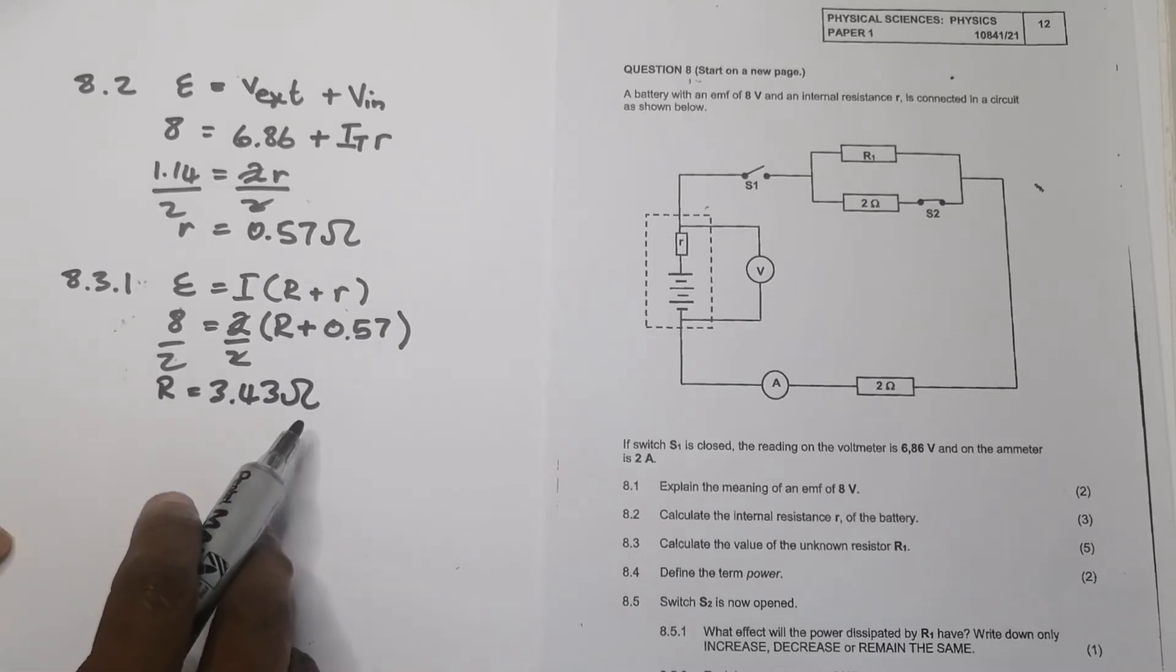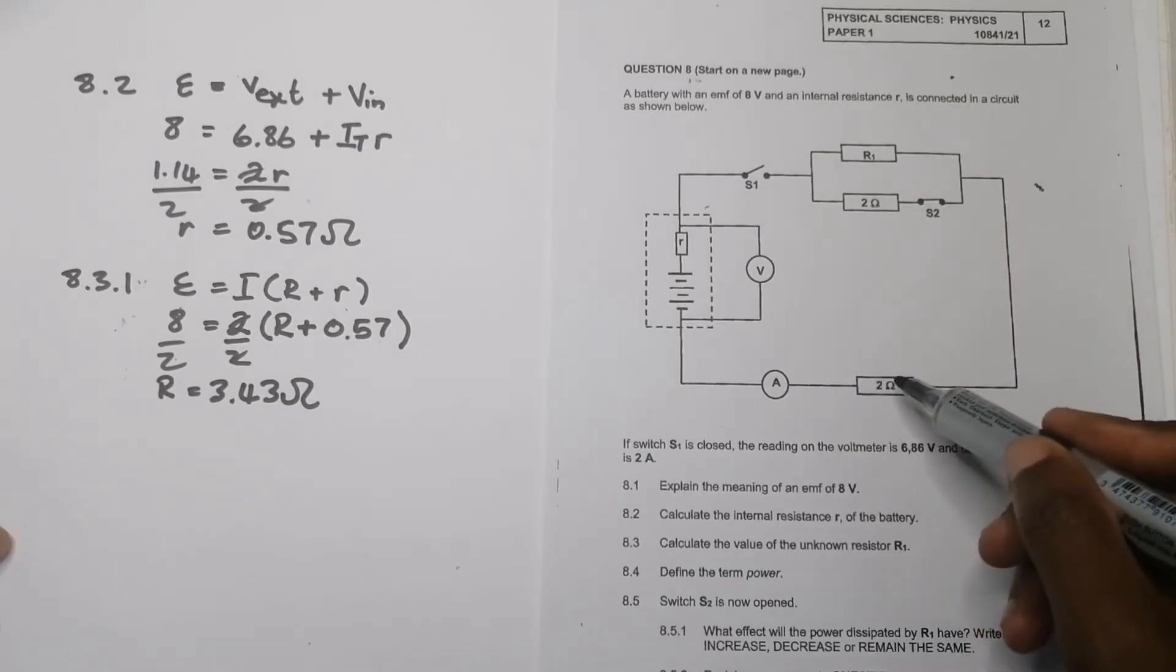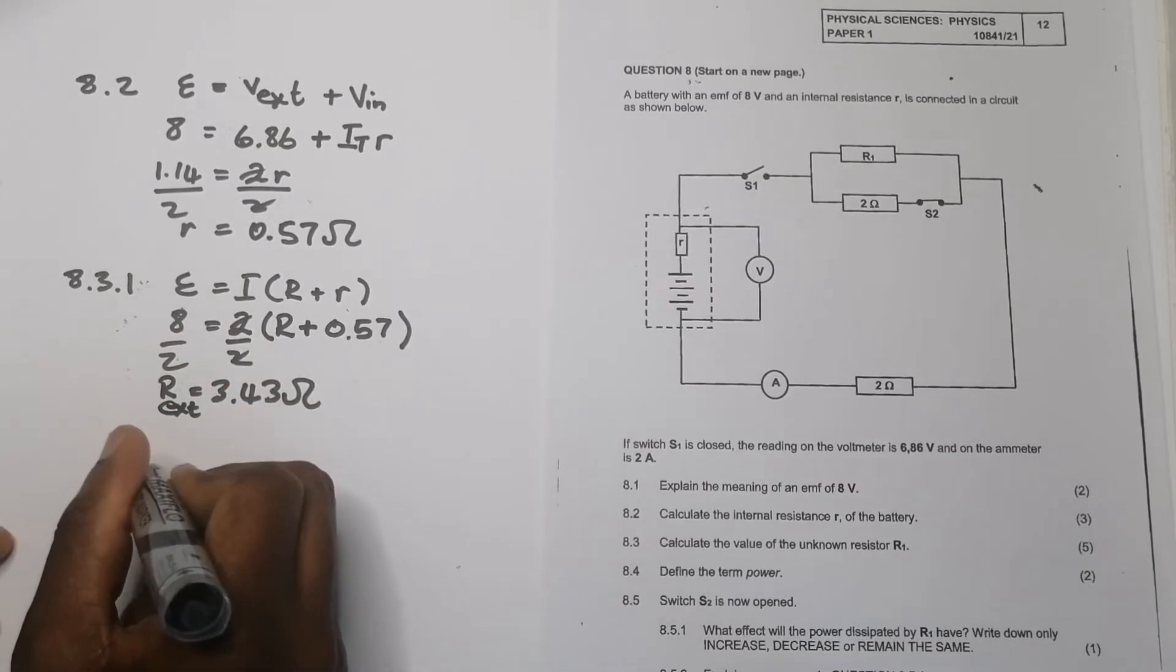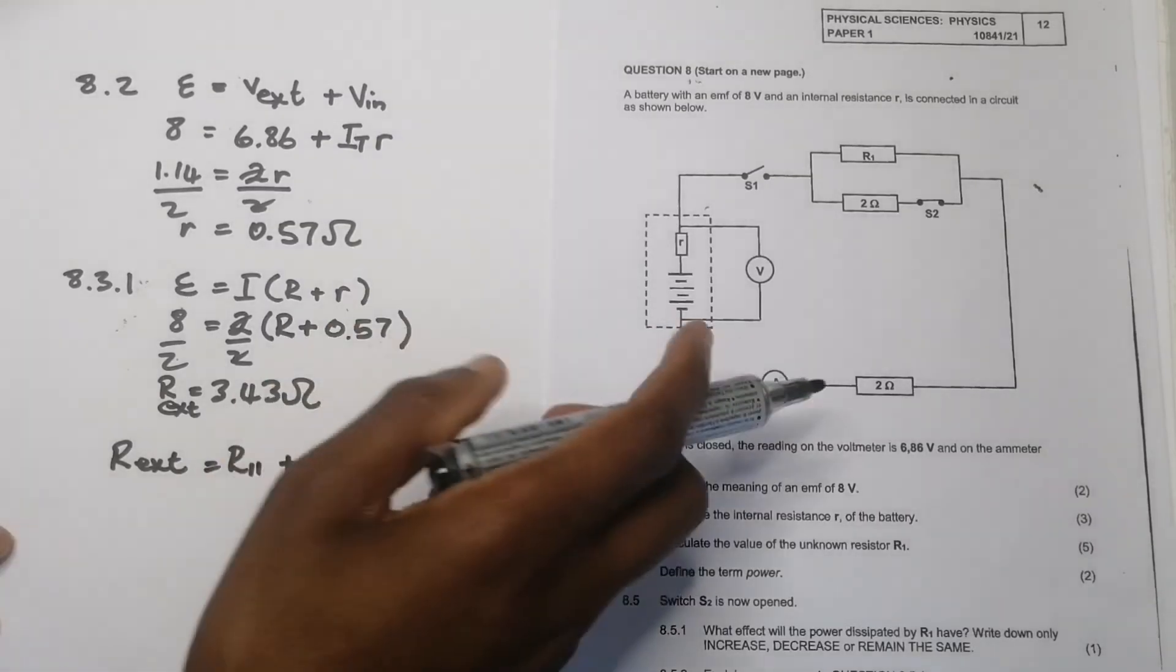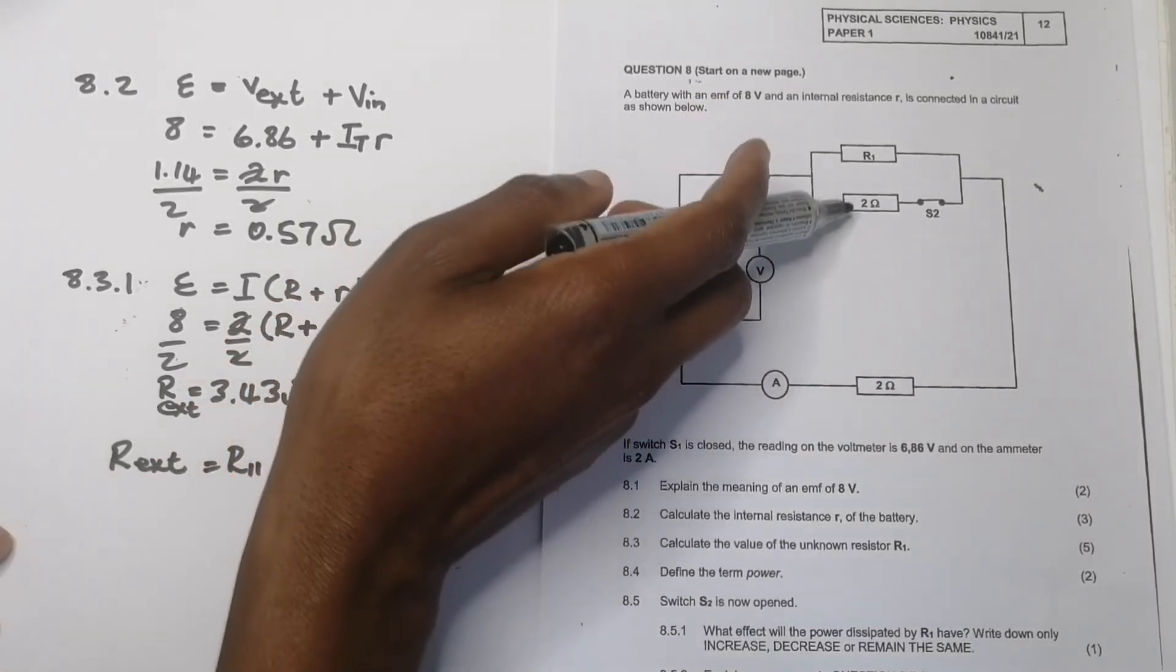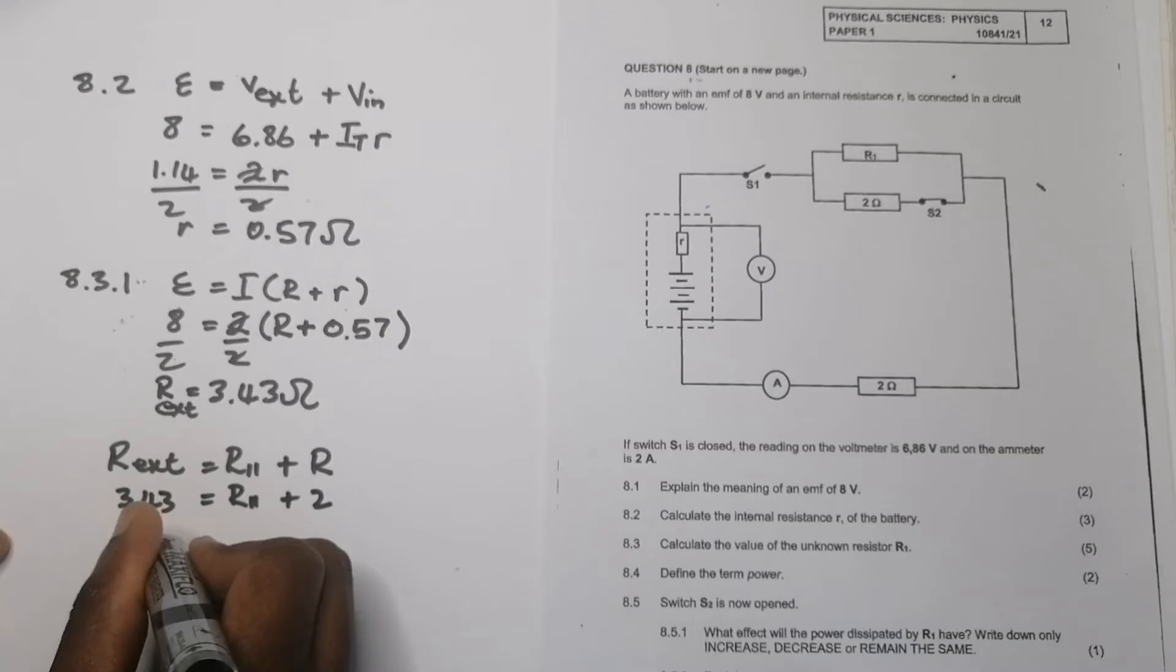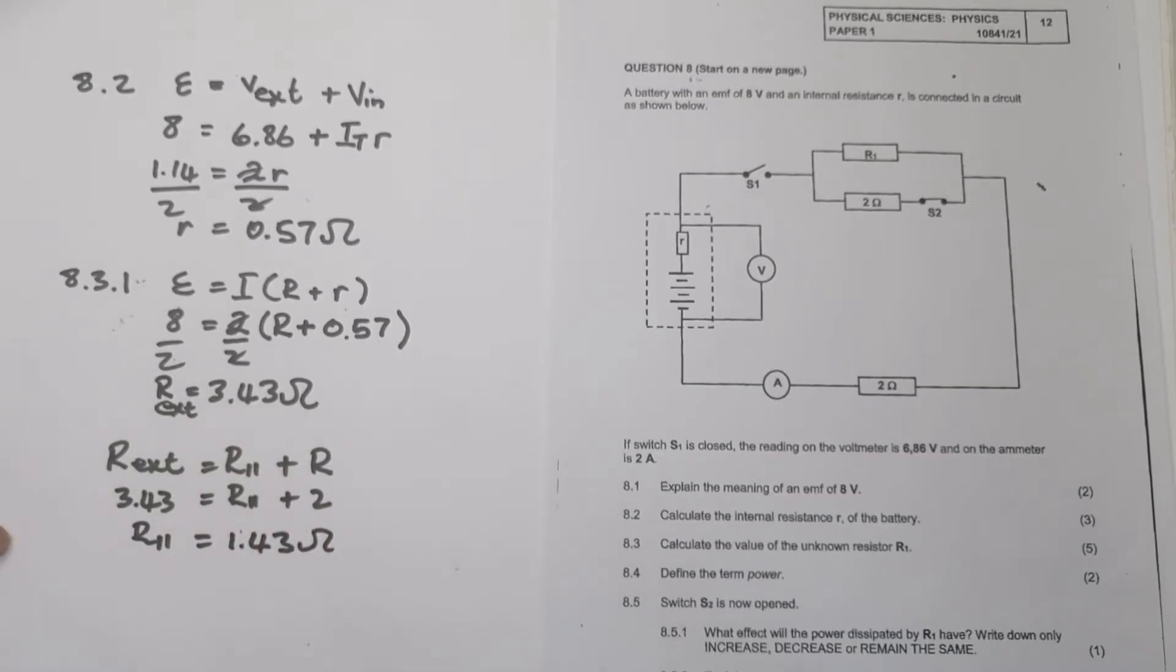If you notice there, your external resistance is composed of this one resistor here plus the combination of those two in parallel. This is R external over here. I know that my R external would be R parallel plus that one resistor there, the 2 ohm resistor. I want to find out what R parallel is because if I can get the effective resistance in parallel, then I can get R1. My R external is 3.43, the other resistor is 2 ohms, so my effective parallel resistance would be 1.43 ohms.